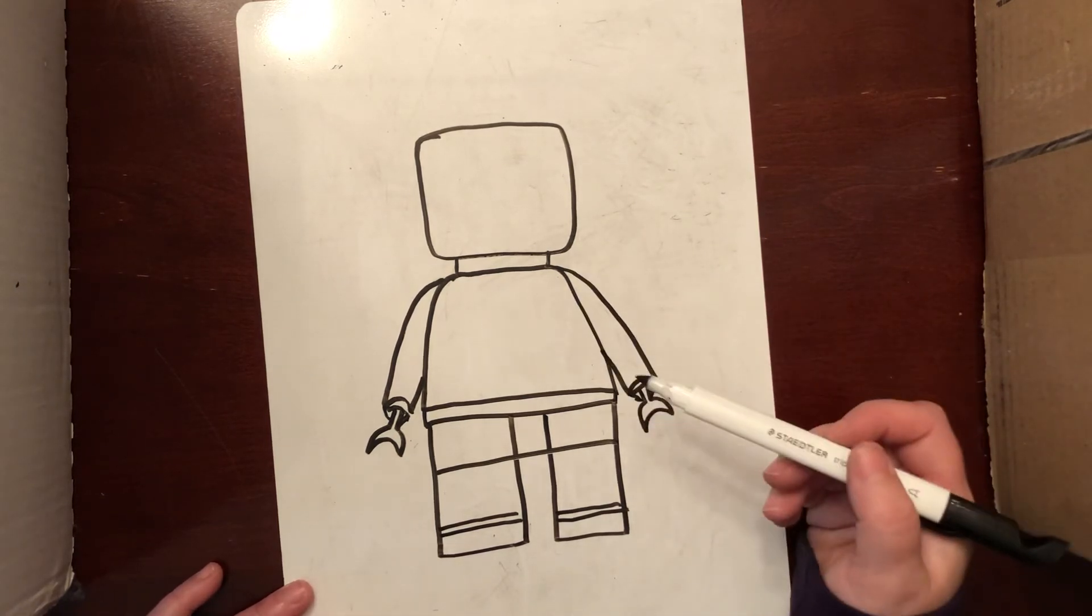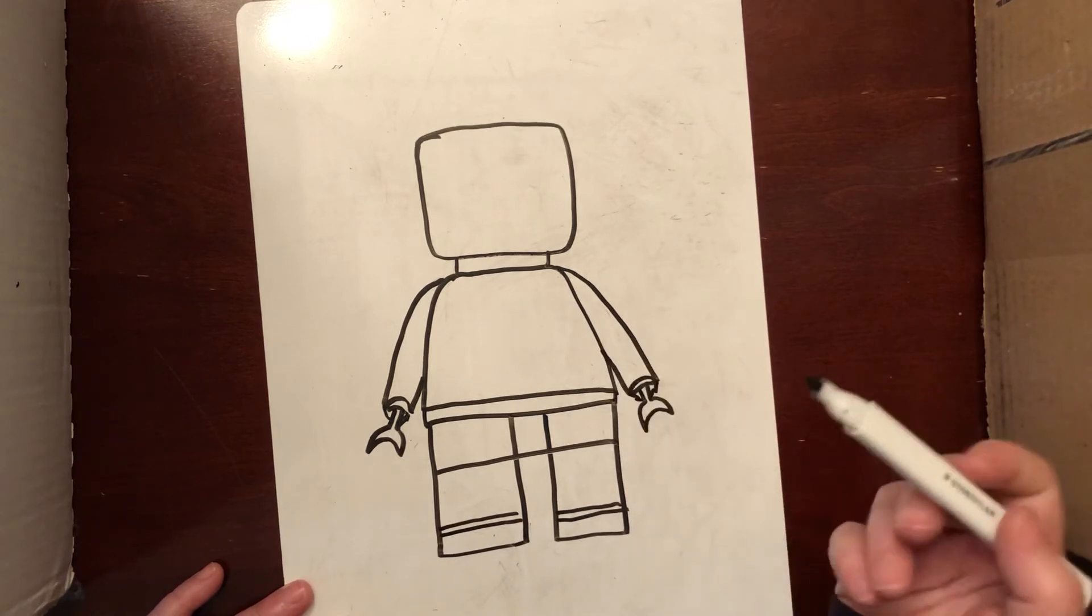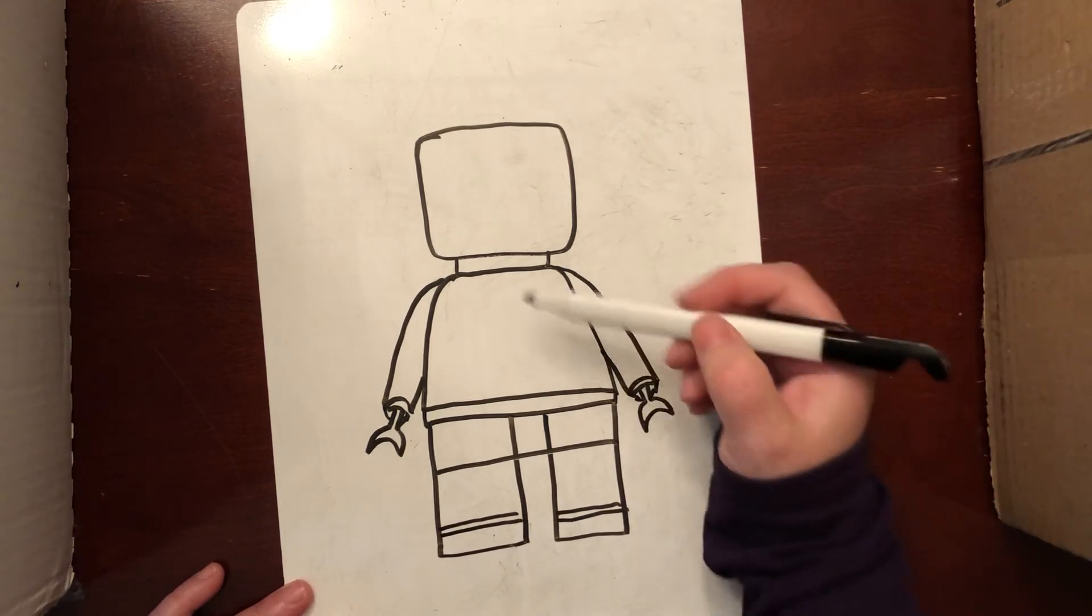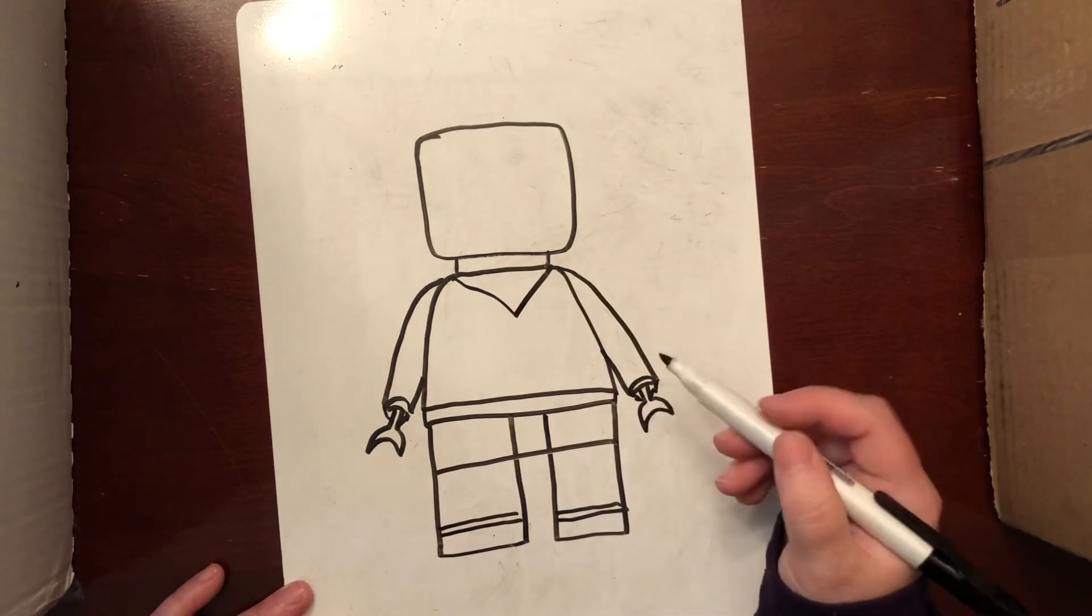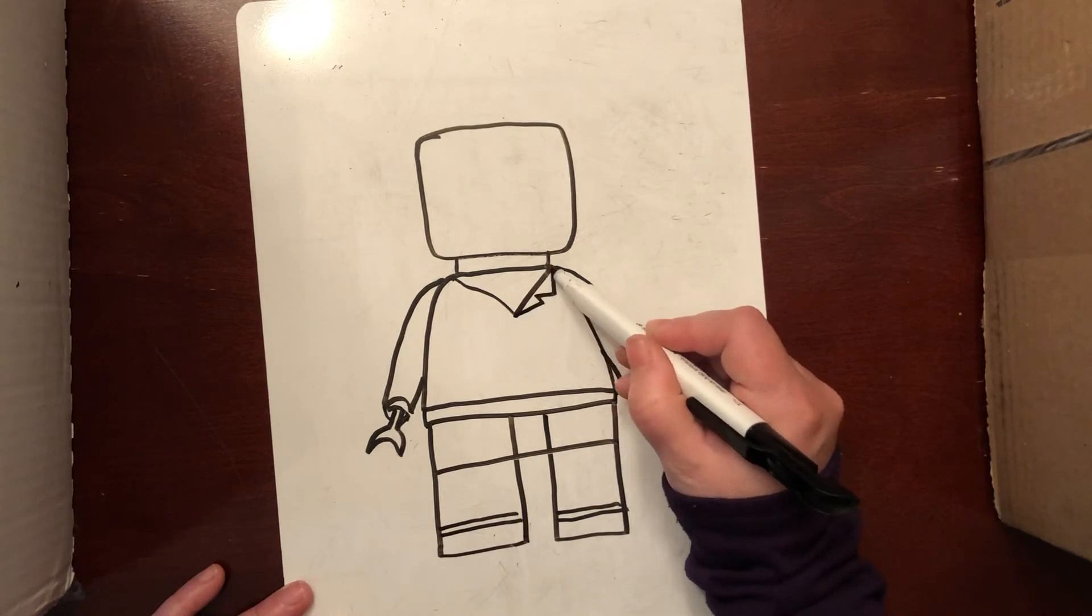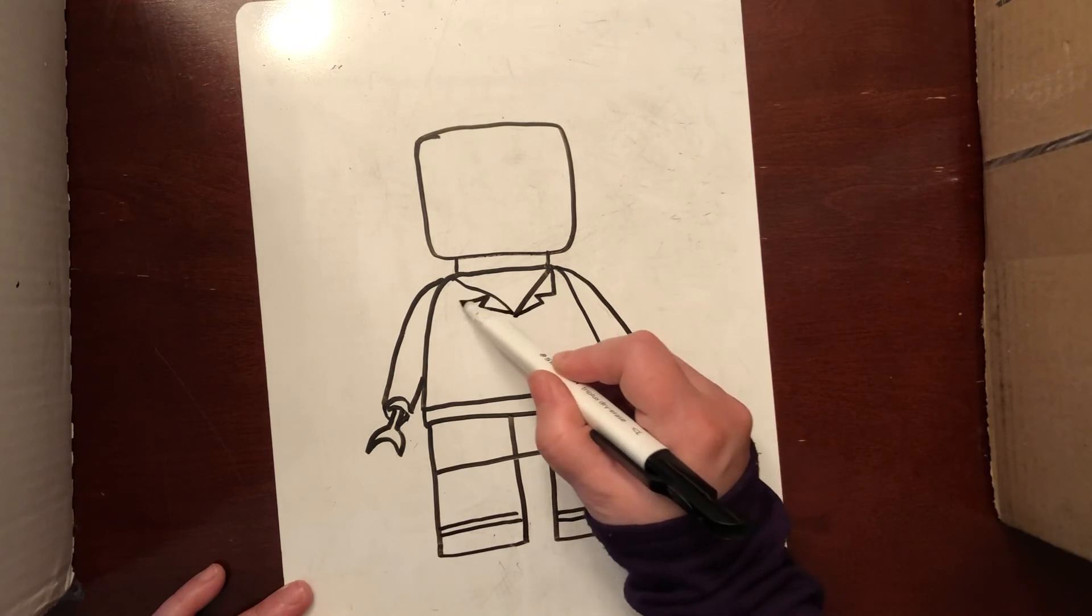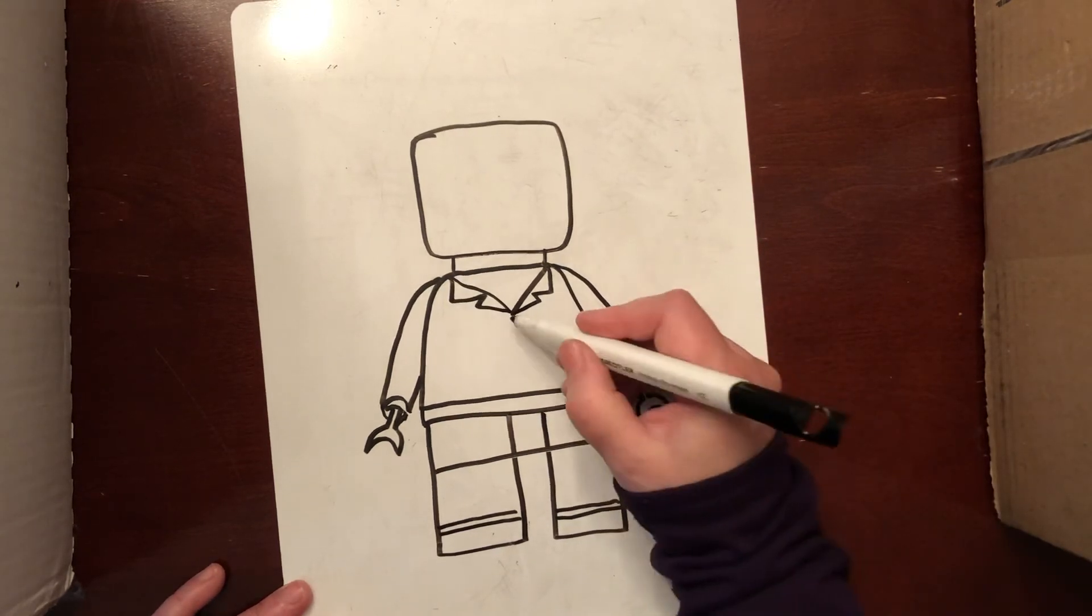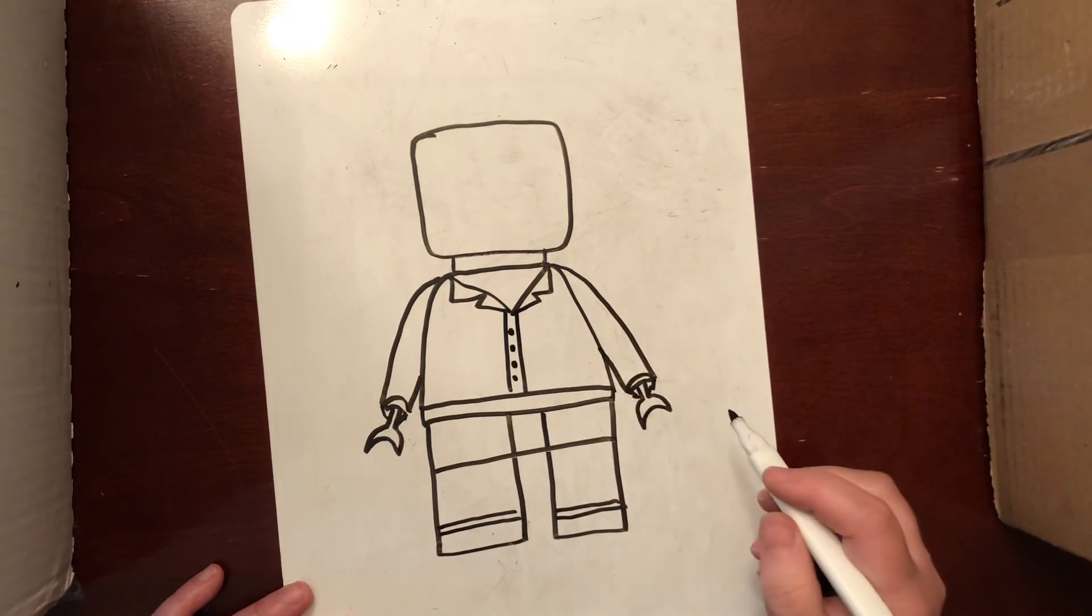You can decorate your LEGO character's shirt and pants however you'd like and color it. I might just show you how to put a simple shirt on. I'm going to do a V-neck. You could make a collar on your shirt if you'd like, or you could make buttons, a button-up shirt.